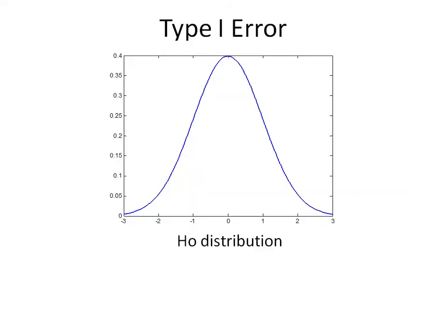So going over type 1 error again, if this is a sample distribution of your null hypothesis, we can calculate a t-critical value for which the area under the curve to the right of it on the t-distribution is equal to alpha. If the t-statistic you calculate or the z-statistic is greater than this cutoff value, then you're in the rejection region and you would reject the null hypothesis.